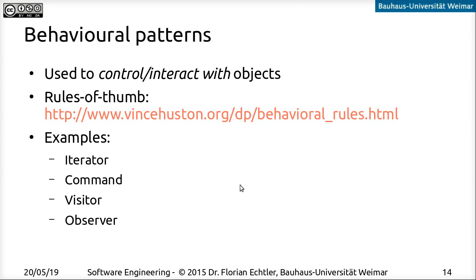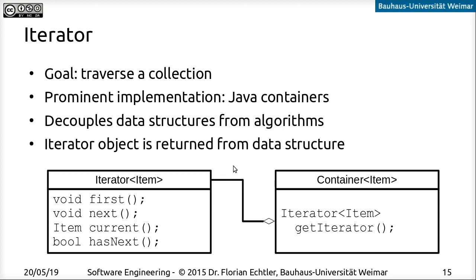Let's start with the probably most prominent behavioral pattern: iterator. The fundamental idea is that you have a collection of objects and want to step through all of these objects. A very widely used implementation of this is containers in Java and C++ as well. The fundamental idea is that you can split the data structures that store your data from the algorithms that operate on your data.